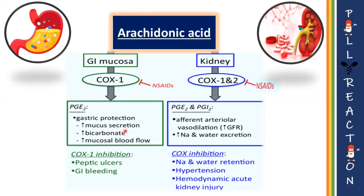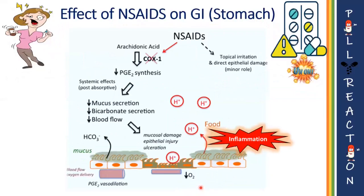In the kidney, PGE2 and PGI2 help in vasodilation of the afferent arteriole, which increases GFR. When NSAIDs inhibit these physiological prostaglandins, it results in peptic ulcer in the stomach, and similarly results in sodium and water retention, hypertension, and hemodynamic acute kidney injury in the kidneys. By this we can understand that when physiological benefits are inhibited, it turns into pathological side effects.